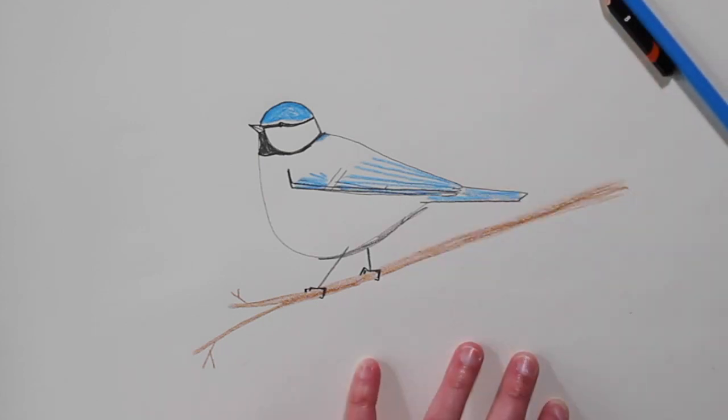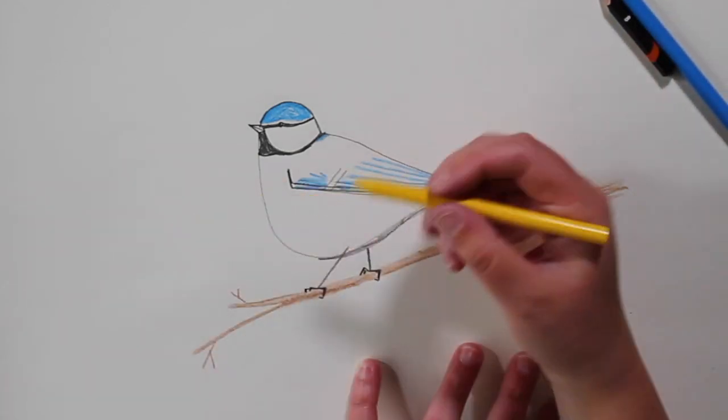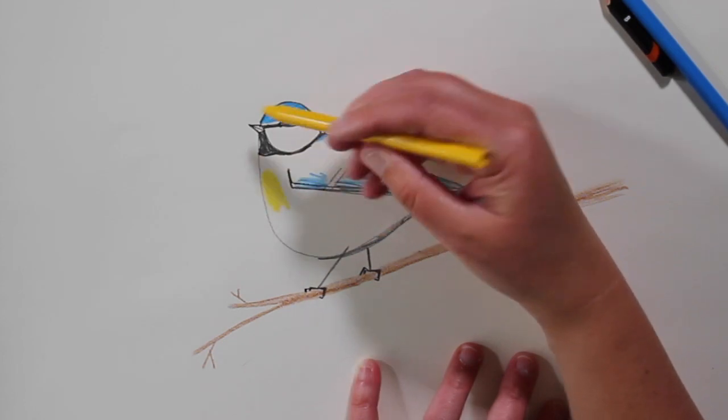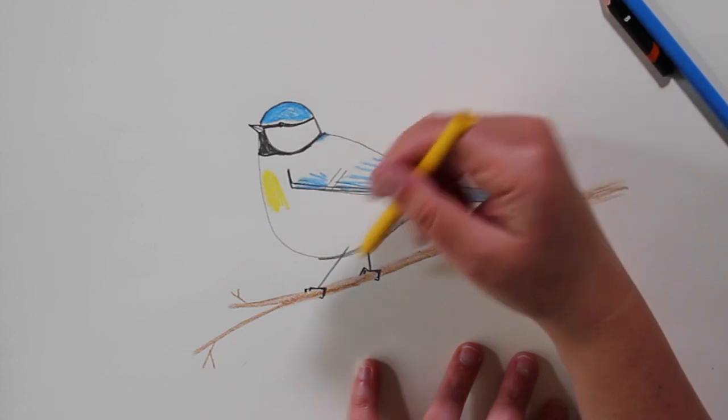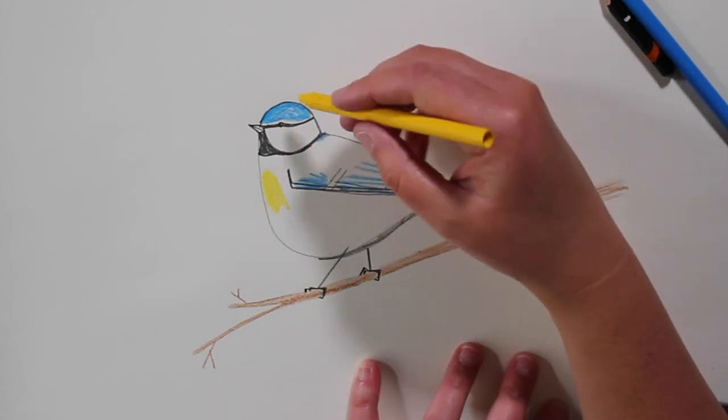And then we're going to take our yellow crayon. And blue tits have really lovely bright yellow bellies. So ours is going to have a bright yellow belly as well.